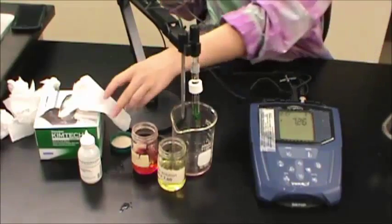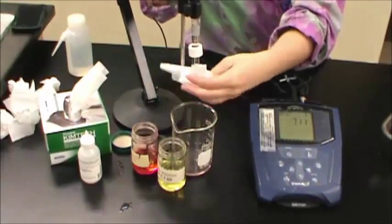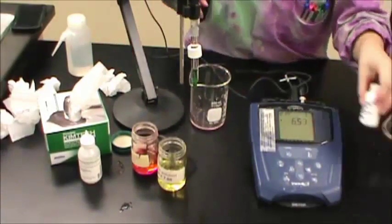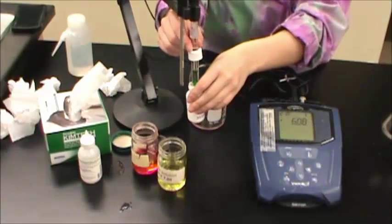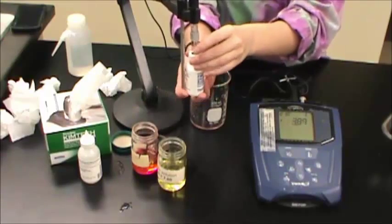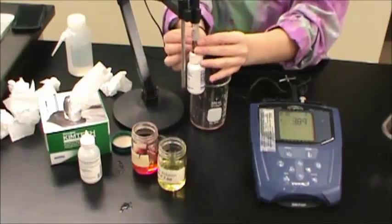When you are finished running all of your samples, rinse the probes a final time and blot them dry. Replace the bottle of electrode storage solution on the end of the pH probe and move the clear band around the probe so that the vent hole is covered. Turn the instrument off and return it.